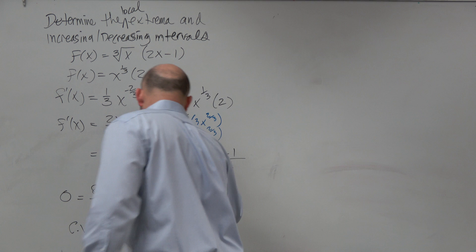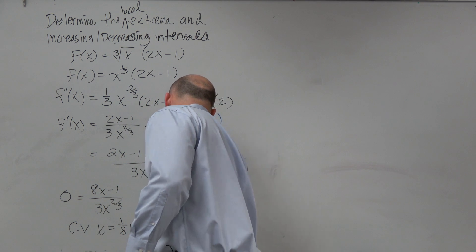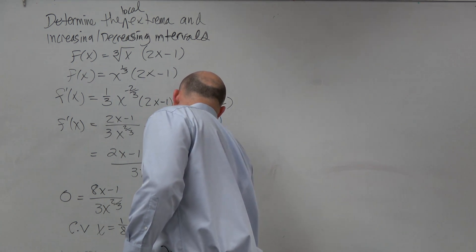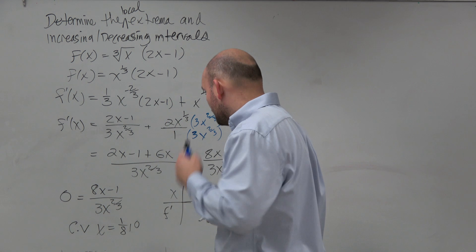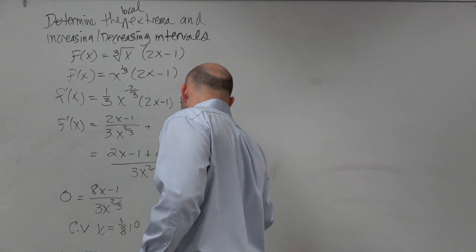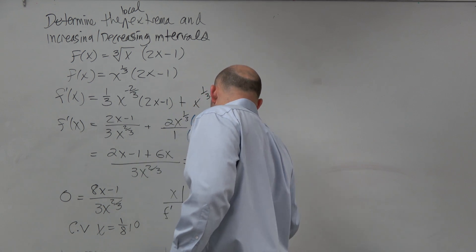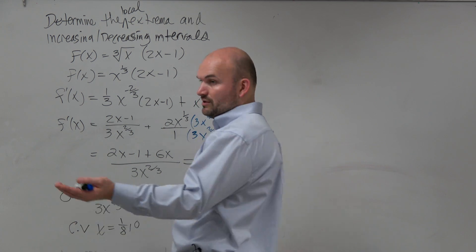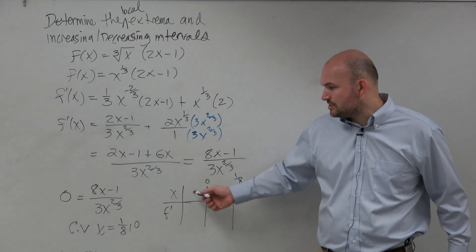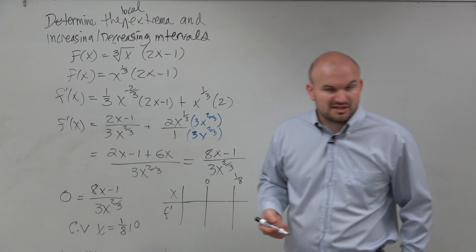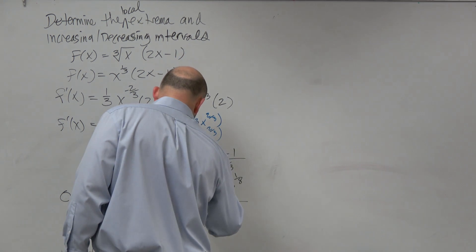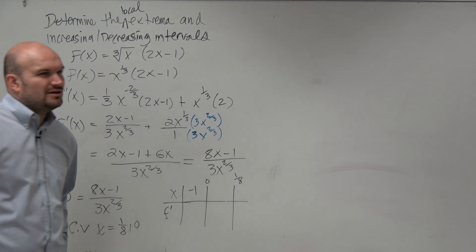So now, let's go ahead and do a nice little table. And we're going to have our intervals at 0 and at 1/8. Since we don't have a closed interval here, we can really pick any number that's less than 0. So let's pick -1. Between 0 and 1/8, which number should I pick?